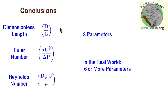What we receive now are three dimensionless groups: dimensionless length, Euler number, and Reynolds number. In the real world we have six or more dimensionless parameters, but this is only an indication of the minimum.